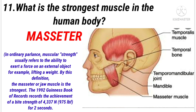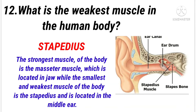What is the strongest muscle in the human body? Answer: Masseter muscle. What is the weakest muscle in the human body? Answer: Stapedius.